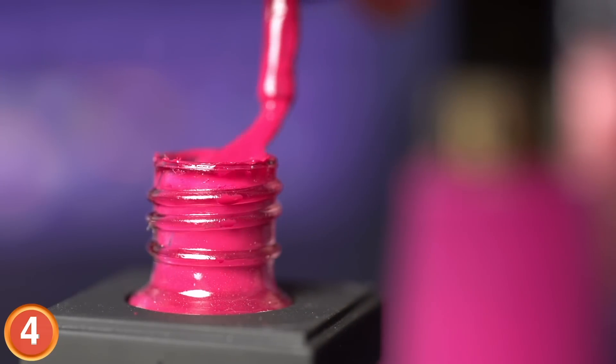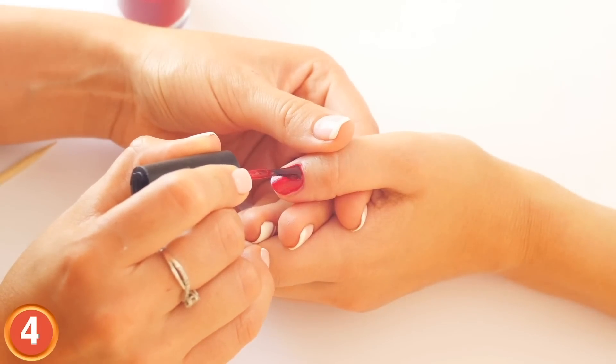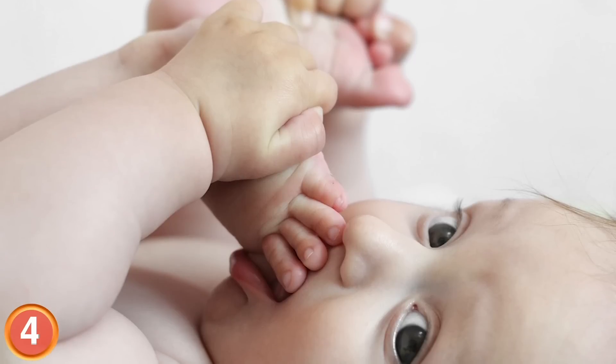One cheap and effective method is applying a clear, bitter-tasting nail polish, which in time discourages the habit. I had to use that method to stop sucking my thumb. Fun Gabin fact.